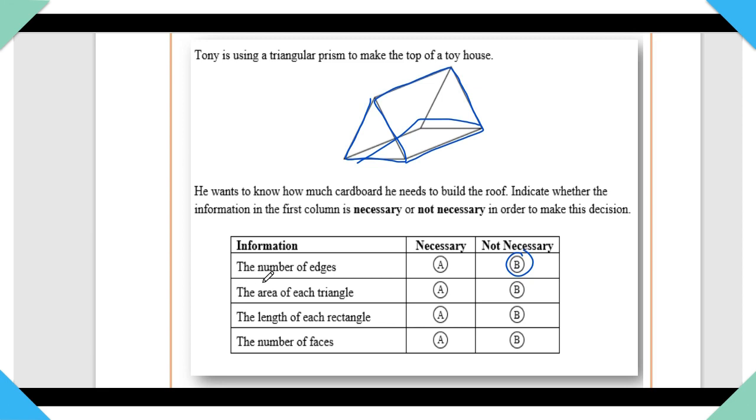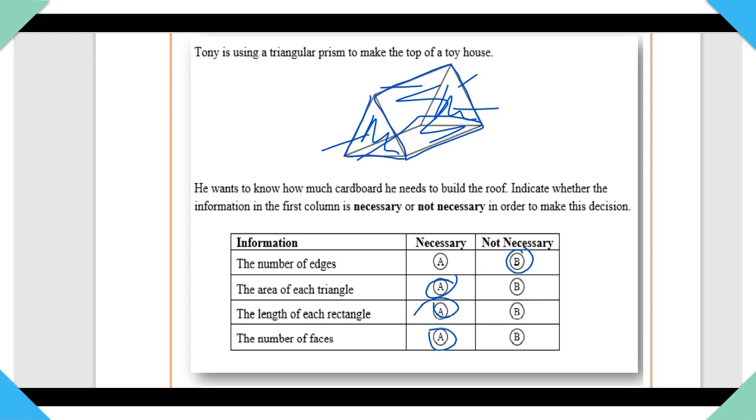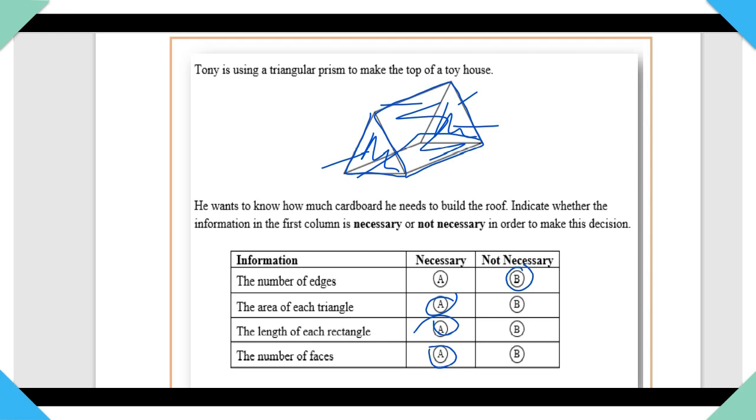What about the area of each triangle? Yes, we need to know the area of the two triangles in our prism. So that is necessary. We also need to know the length of each of our rectangles. That's necessary information. What about the number of faces? Yes, we need to know the number of faces. These are our faces. We need to know how many faces our prism should have. So this is also necessary. This problem is really testing your knowledge of solids, geometrical models. This is something that you guys need to know. If what I did wasn't clear, if you're not seeing why I selected these answers, then please look it up.